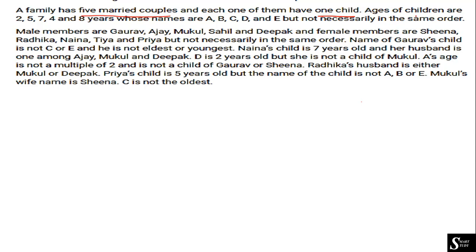The ages of the children are 2, 5, 7, 4, and 8 years, whose names are A, B, C, D, and E — but not necessarily in the same order as given.